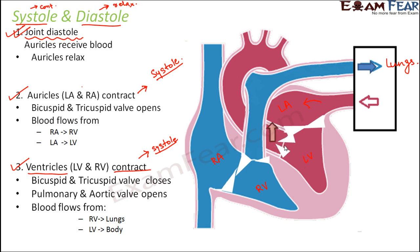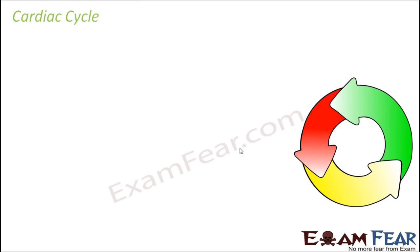Then the left ventricle will contract and the aortic valve will open. Therefore oxygenated blood will flow from the left ventricle to different parts of the body. That is how this entire process of passing blood through various chambers of the heart takes place. During this process, the auricles and ventricles contract and relax periodically, because the process keeps on continuing over periodic intervals of time — and this periodic relaxation and contraction gives rise to the heartbeat.